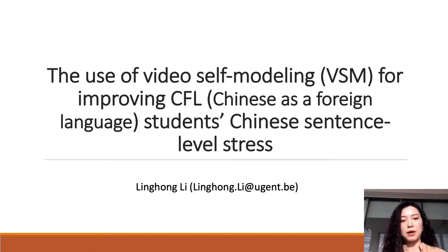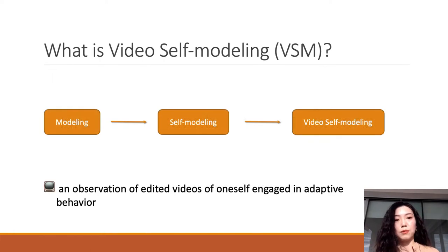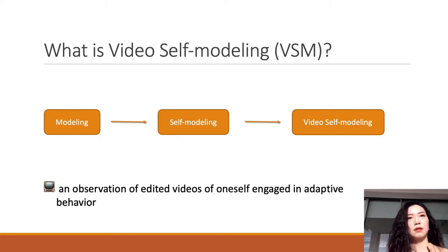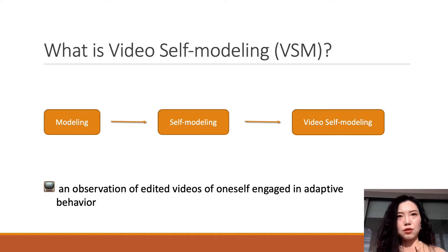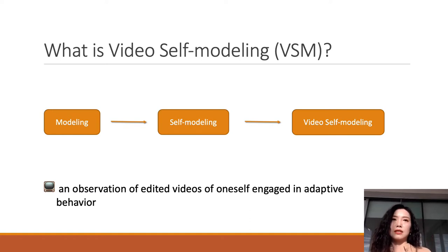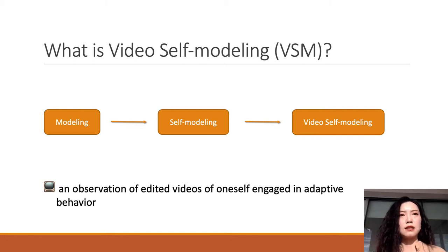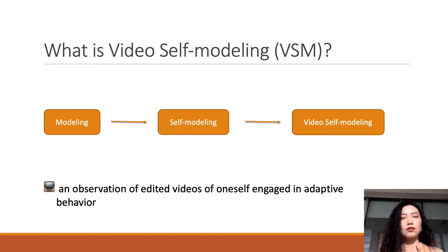First, we will talk about what self-modeling is. Modeling as an instructional approach, based on the theory of observational learning, has been used for many years to improve students' learning abilities. Self-modeling is considered to be the most effective model, as oneself being the most similar to the target person maximally influences the effectiveness of the model.